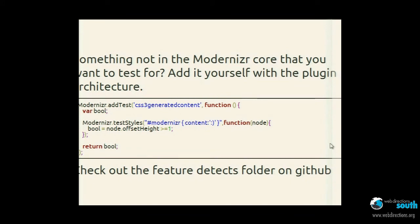And this leads into the plugin architecture. All those methods really help for working with this. So, if there's a feature not in the core, you can go and add it yourself. For example, I've got a demo here of generated content — you can see the CSS3 part of it. You can go in there, add the test, that's the name of the test that's going to happen, and it'll be appended to the HTML element and also added to the Modernizr global. I'm using the testStyles method here to inject the style and work out if it's supported or not. If you go on the GitHub repo, there's a feature tests folder that's got a whole bunch of plugins that will be better integrated in the 2.1 release.